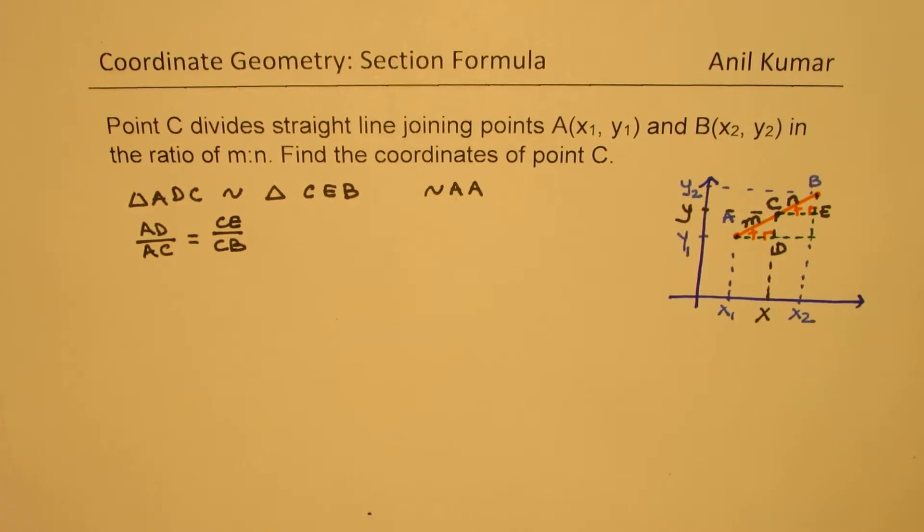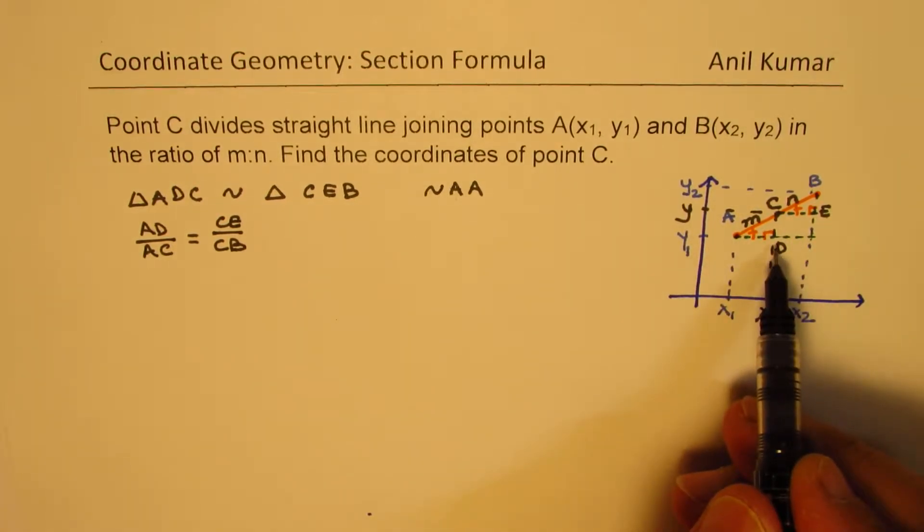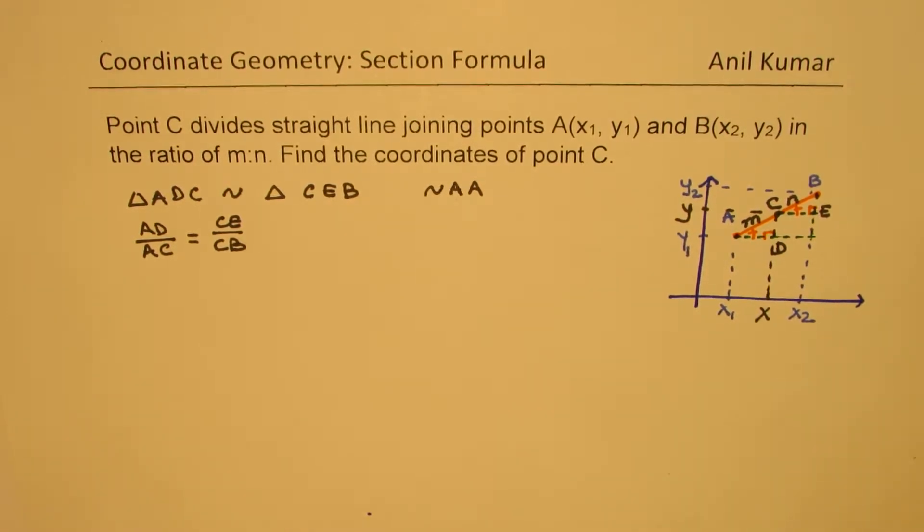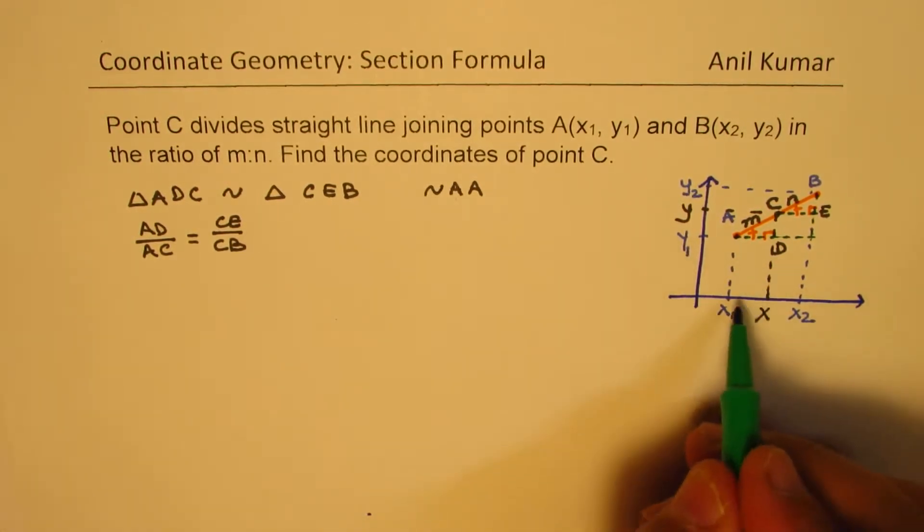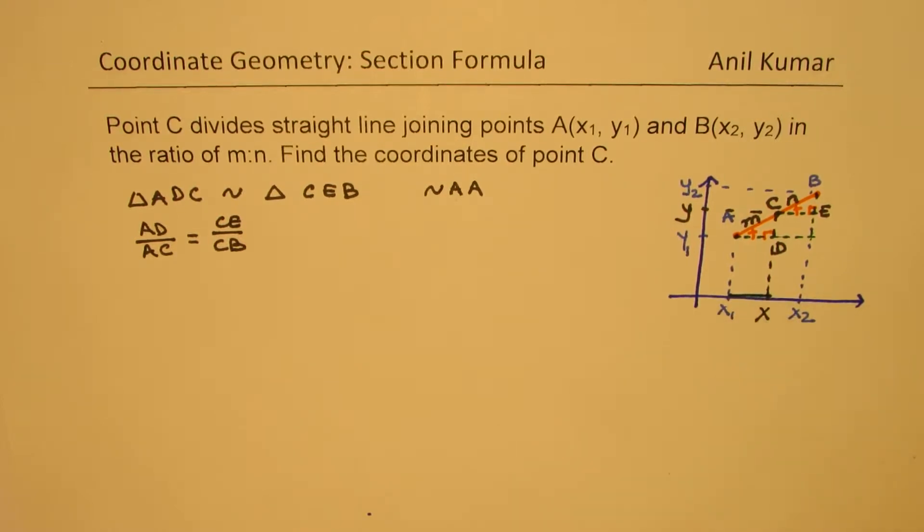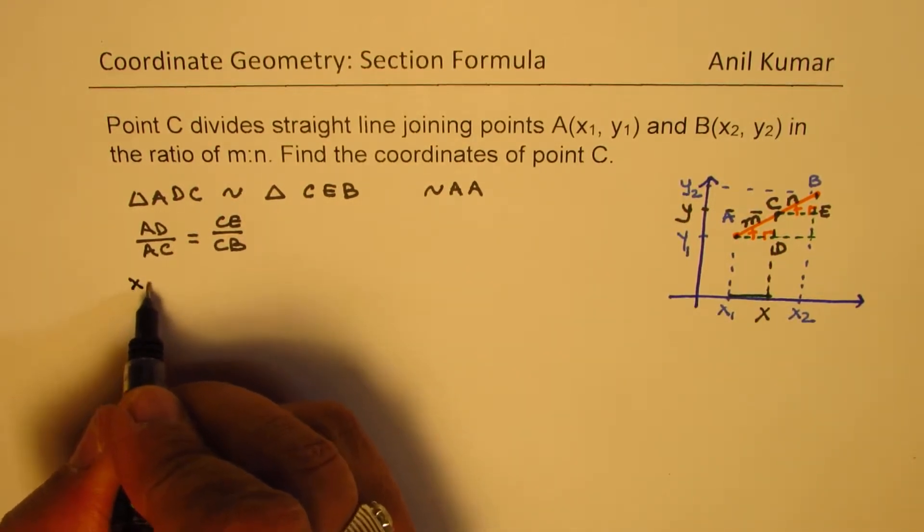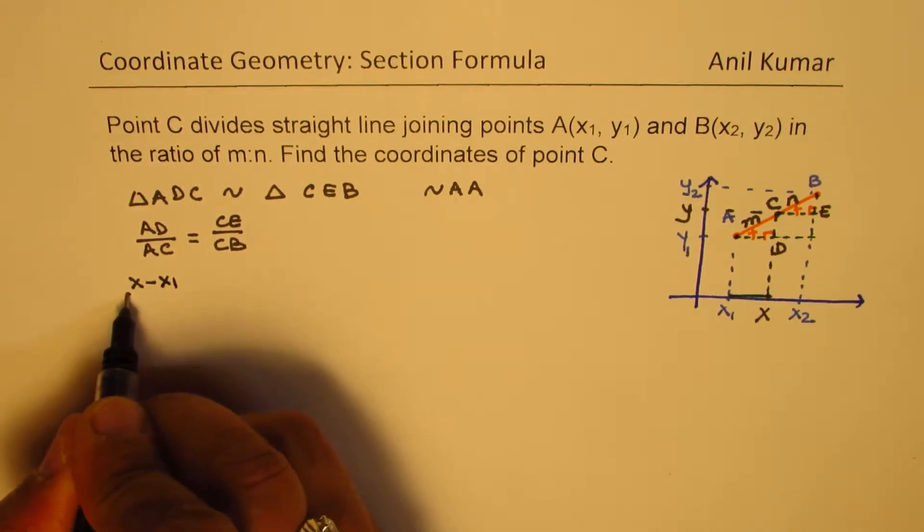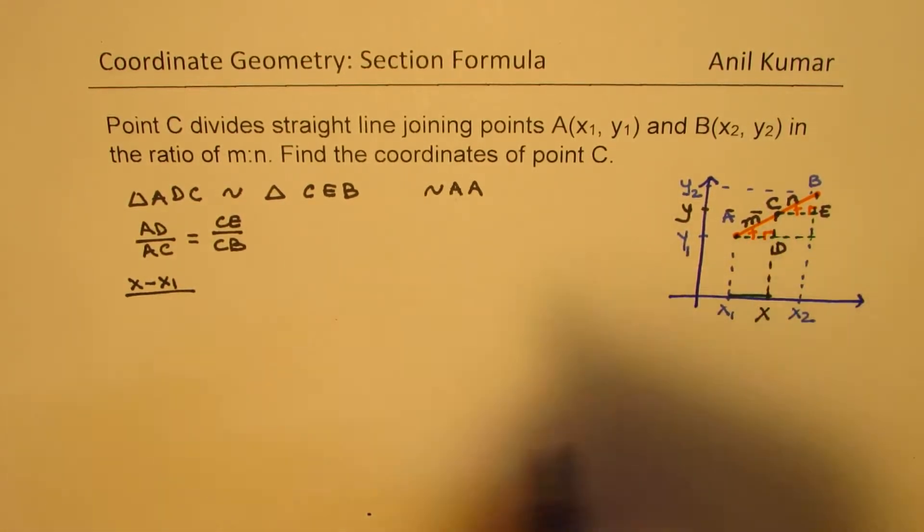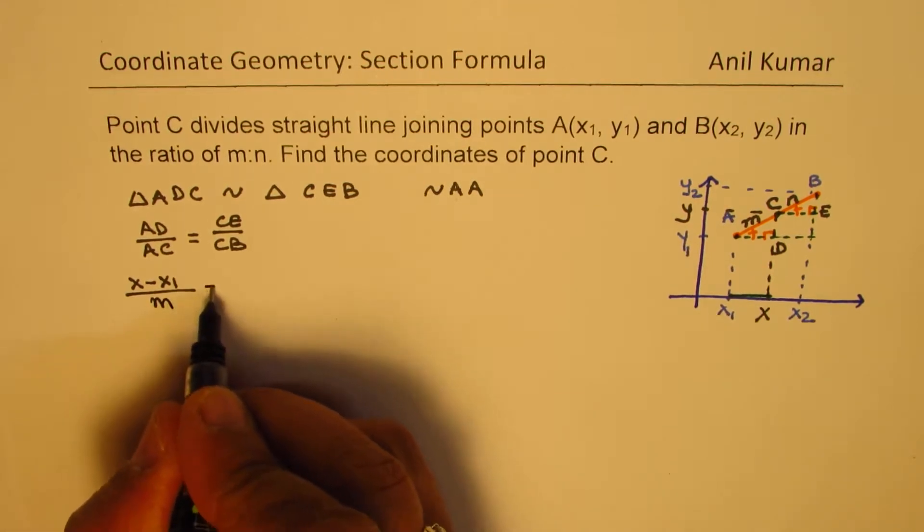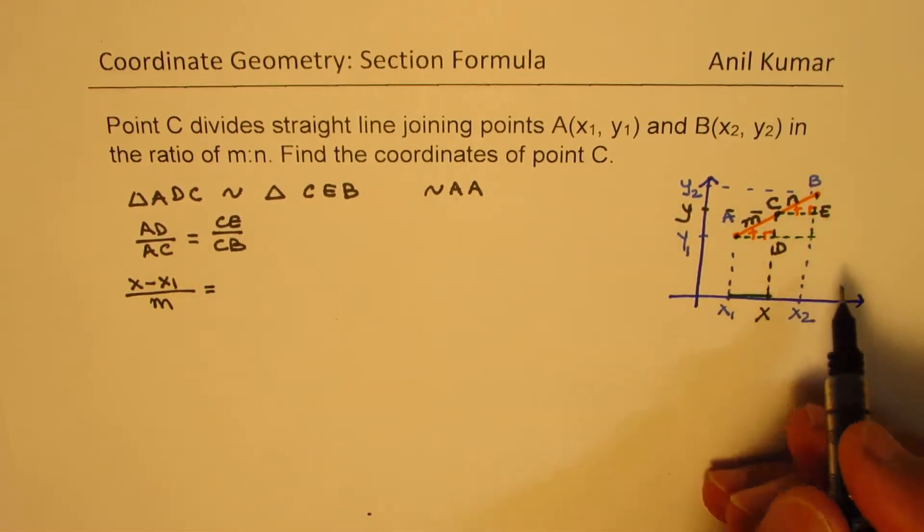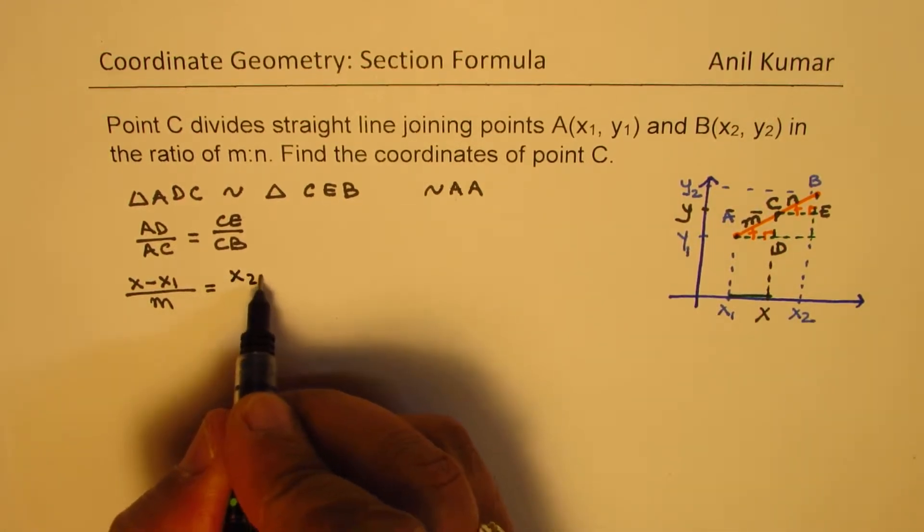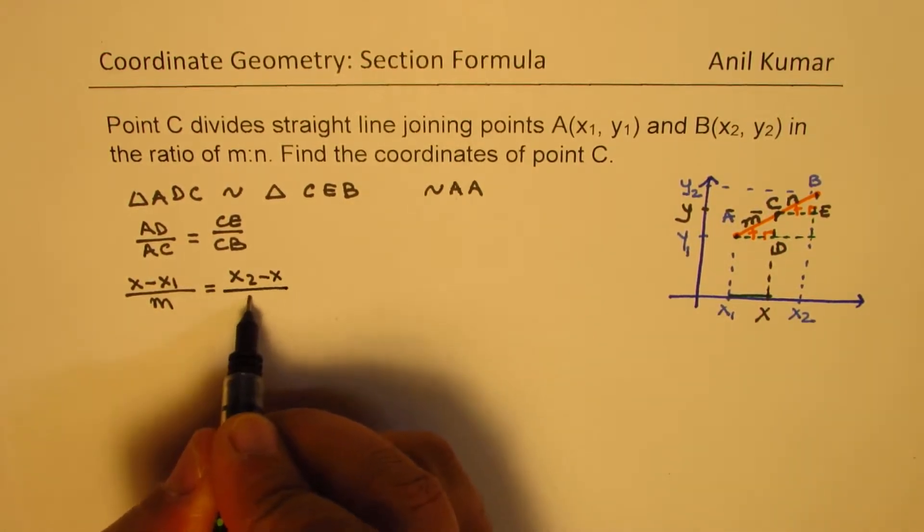So we have AD over AC equals to CE over CB. AD over AC is basically difference of x and x1. So this distance, AD, is distance between x and x1. So I can write AD as x minus x1. So we get (x minus x1) over n equals to CE, which is (x2 minus x) over n.